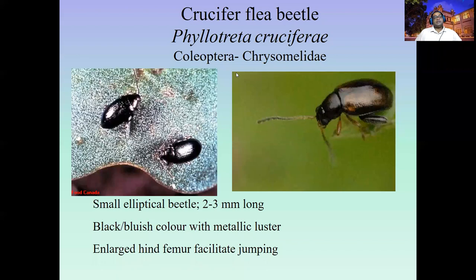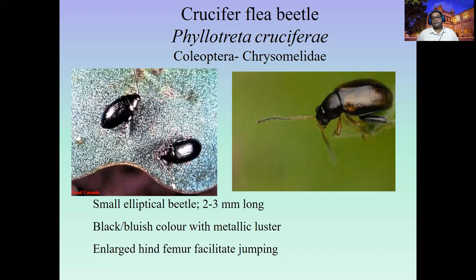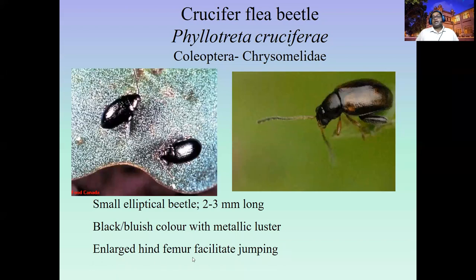The next pest is the cabbage flea beetle, Phyllotreta cruciferae, belonging to Chrysomelidae, Coleoptera. It is also called the crucifer flea beetle. It is a very small, shiny blackish or blackish-blue colored beetle, nearly about two millimeters long. When you go into a cabbage field, you may feel things jumping around — this is because of the hind leg modification that enables it to jump from one leaf to another. It has a metallic luster on the elytra wing and the thorsal region.